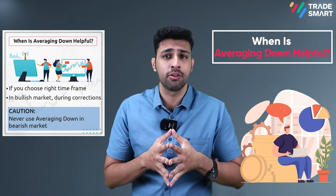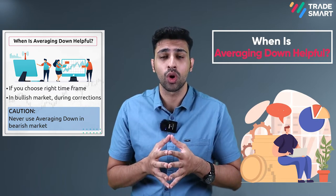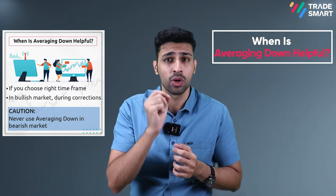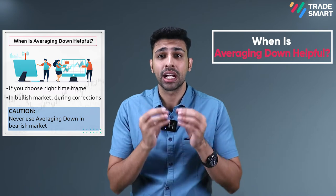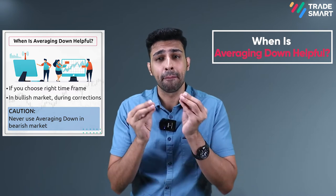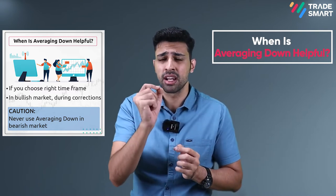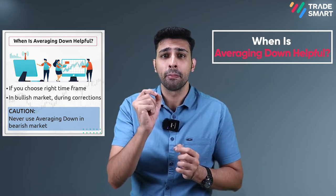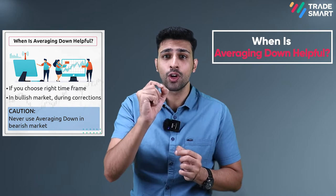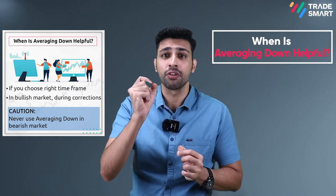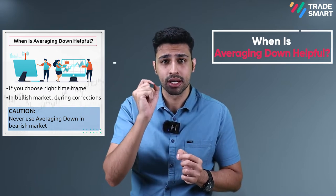However, if you follow averaging down in a downtrend, you can suffer very heavy losses. That means in a bearish market this can be really harmful for you, because the prices of stocks can go down for a really long time.